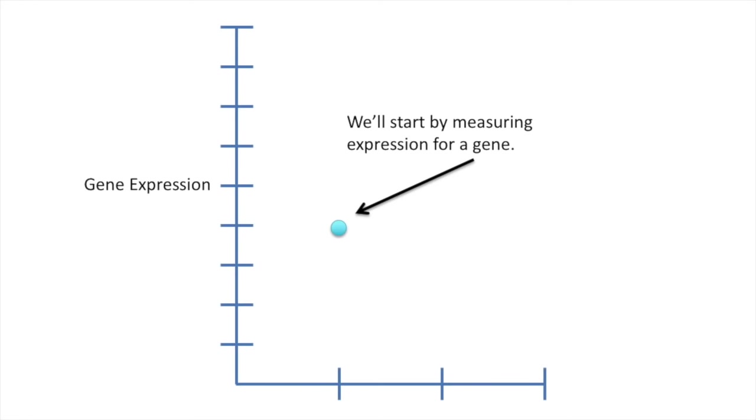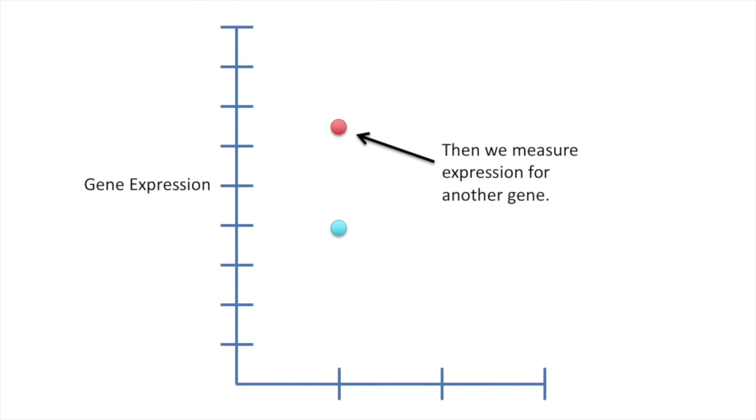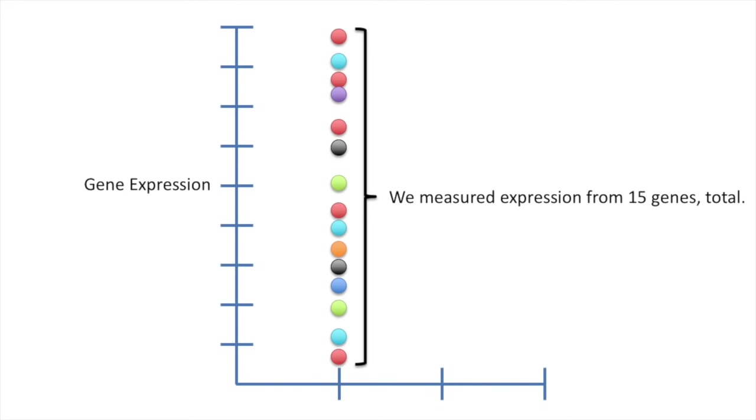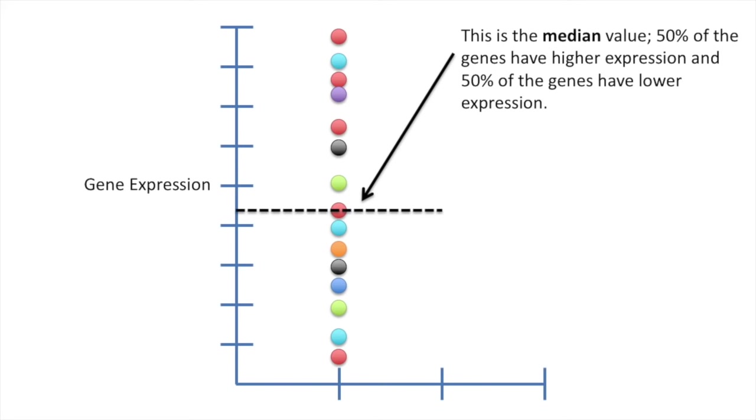We'll start by measuring expression for a gene. Then we measure expression for another gene. We measured expression from 15 genes total. This is the median value. 50% of the genes have higher expression and 50% of the genes have lower expression.